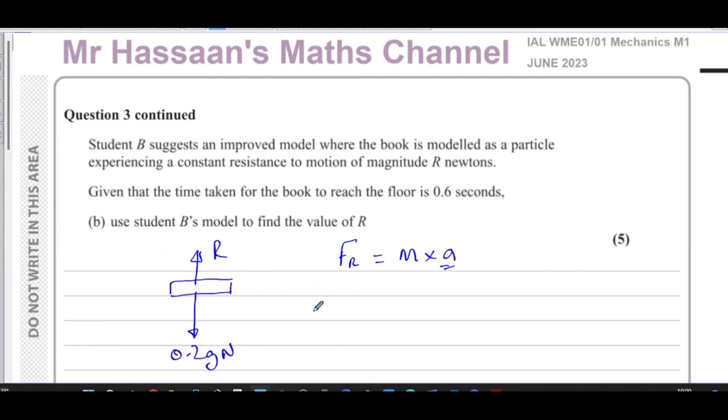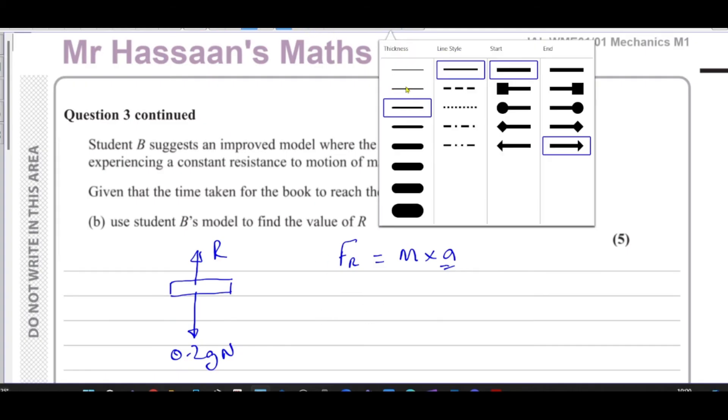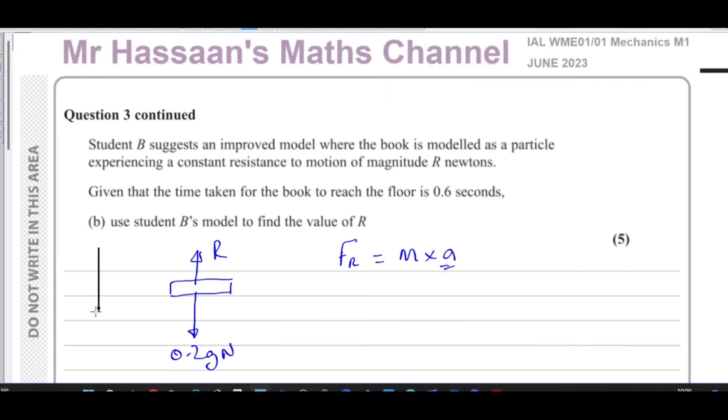Now the resultant force here is going to be, well actually, it's going down. So again, we've got to think about the direction. This is moving downwards. So the direction of the acceleration is down. So I'm going to take down as positive. So if I resolve the forces taking down as positive, I'll say 0.2 G minus the resistance force is equal to the mass times acceleration, which is 0.2 times A.